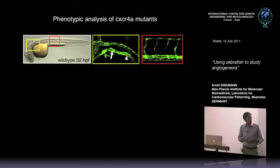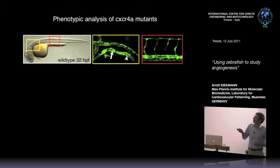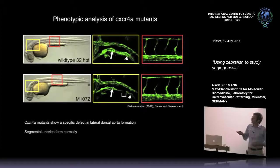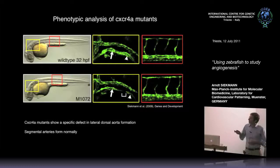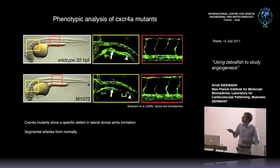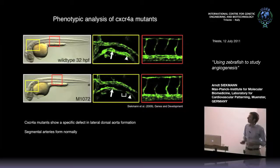We then asked what the phenotype of these mutants is, focusing on lateral dorsal aorta development since we knew CXCR4A is expressed there. In wild type, the yellow box shows the lateral dorsal aorta and the red box shows intersomitic vessels heavily dependent on VEGF and Notch. We observed a very specific defect in lateral dorsal aorta development - the anterior cells no longer migrate posteriorly but go to random positions, creating characteristic gaps. Crucially, the intersomitic vessels look exactly like wild type, so CXCR4A is specifically required for formation of this first aorta but not intersomitic vessels.